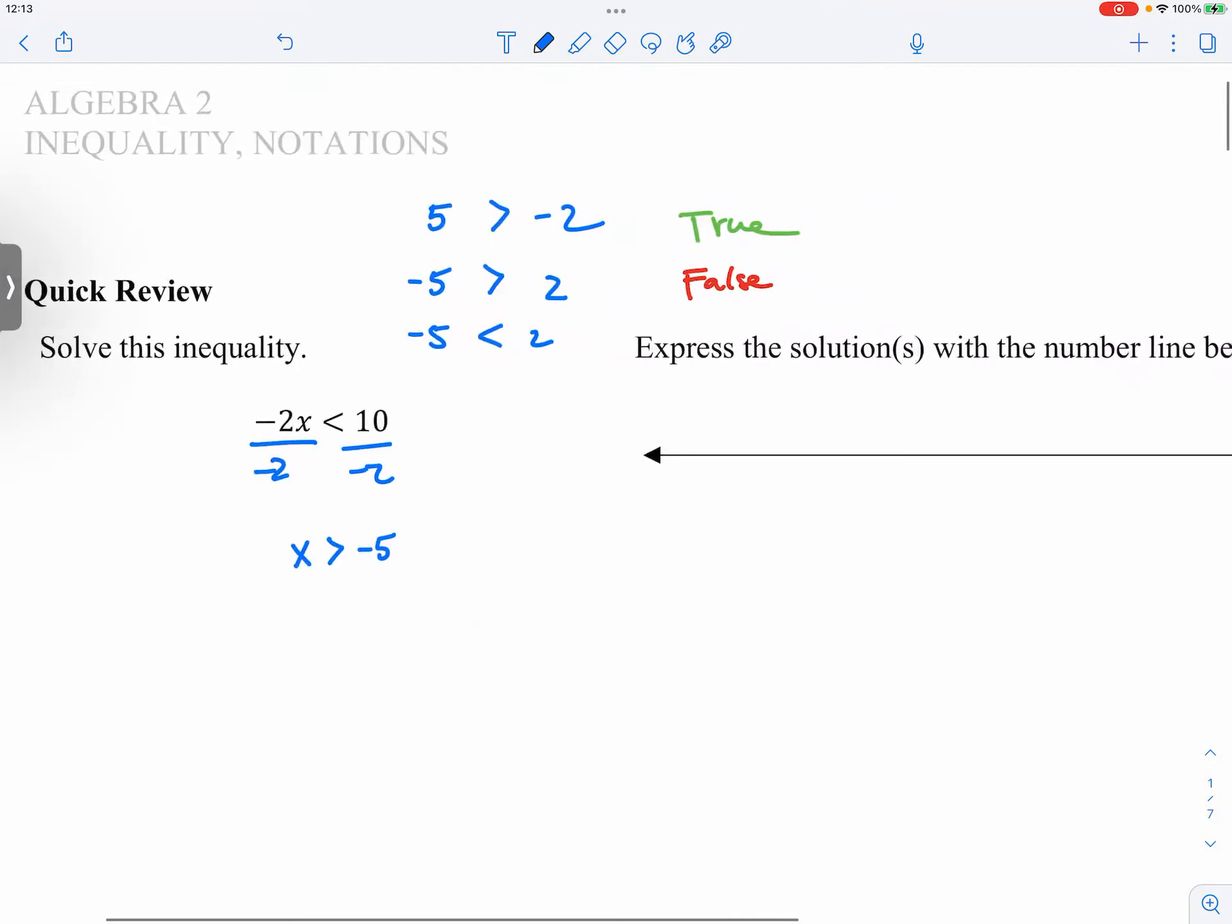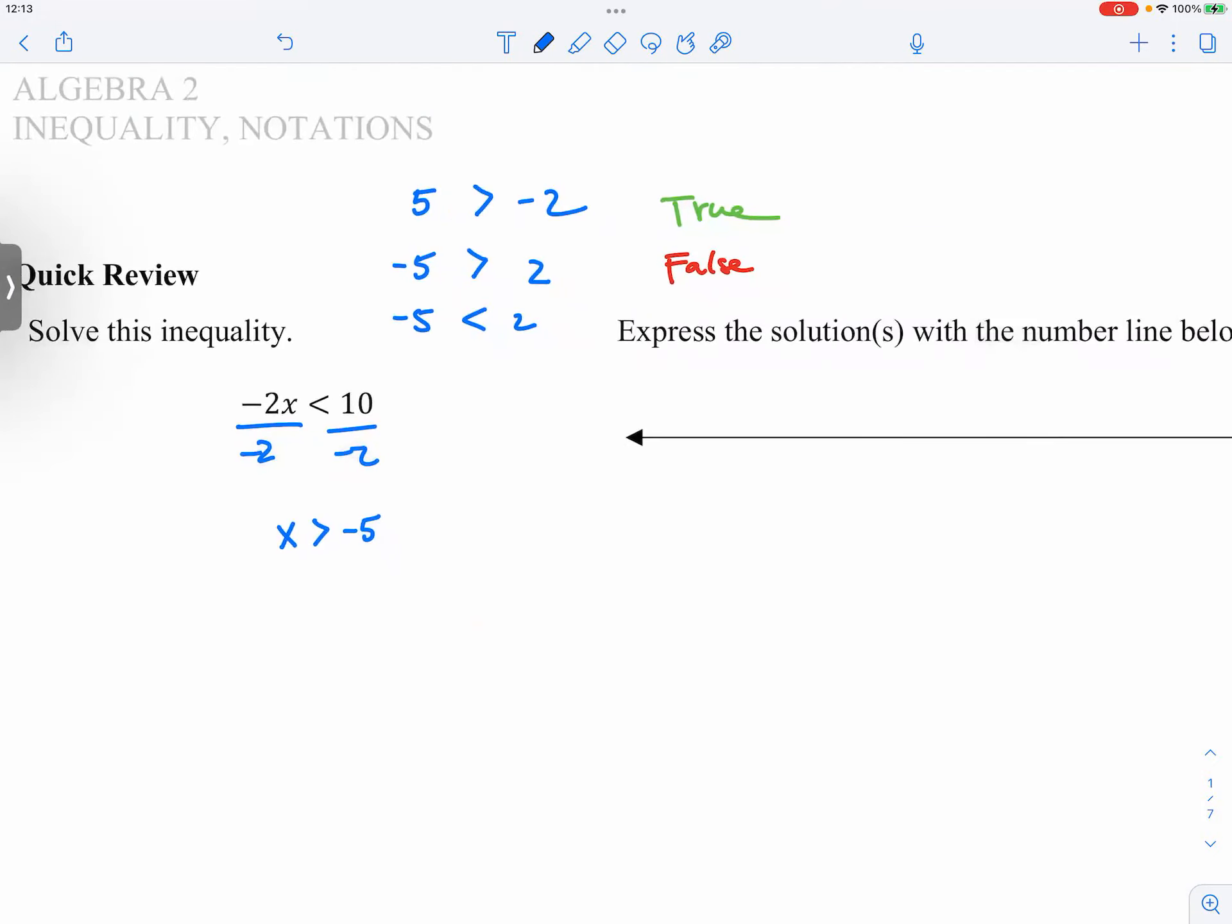So how do we express this on a number line? So somewhere along the line, you can write down negative 5, open circle or closed circle? Open, because we are not including negative 5.